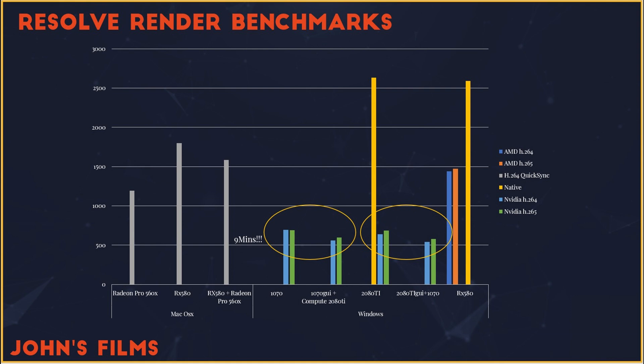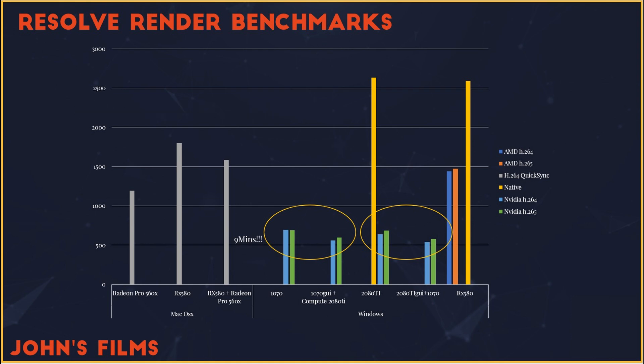My final takeaway from this testing was that if you're going to run two graphics cards — one handling the GUI and compute technology while the other is strictly computing — make the strongest one do the work. It appears that this benefits you while rendering, and presumably it would benefit you during playback as well, though none of these cards explicitly struggled during playback in the preview windows.